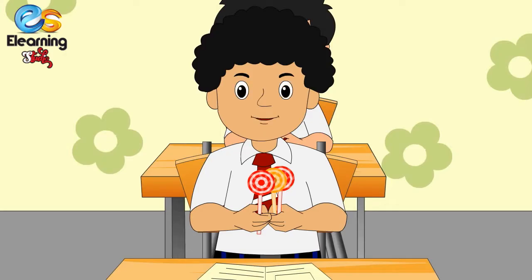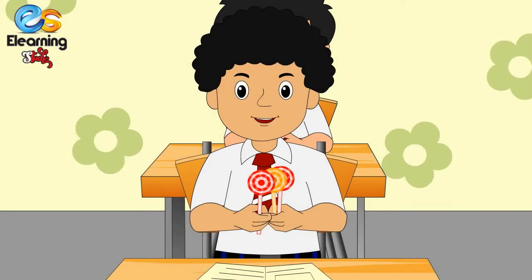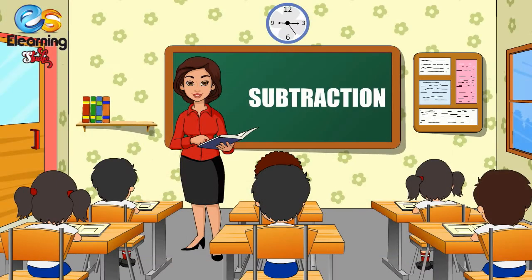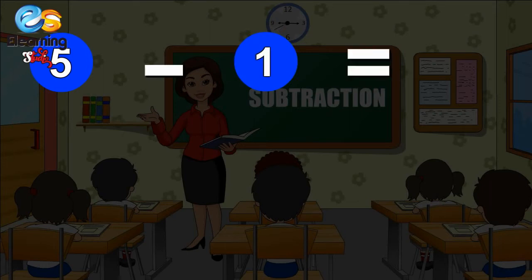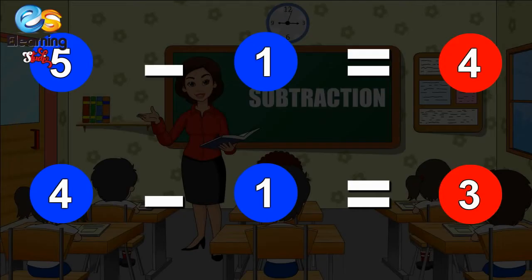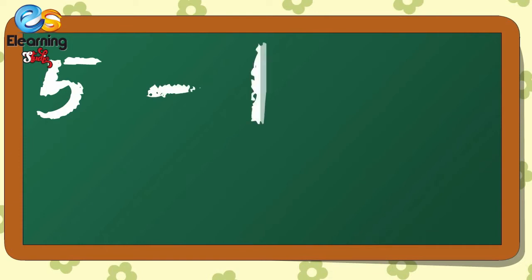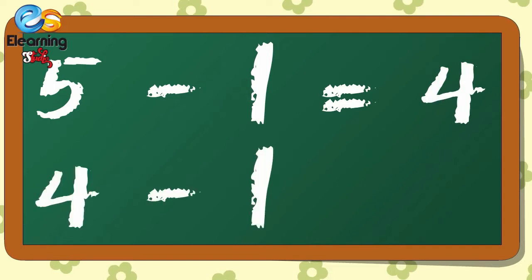I gave one lollipop to Jay, so from four lollipops I have taken away one — three lollipops are left. It is written like this: five minus one is equal to four; four minus one is equal to three.